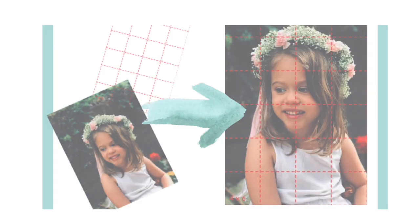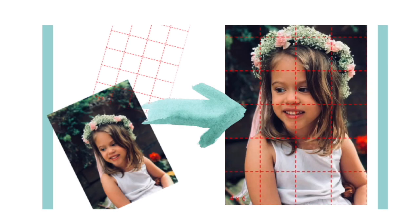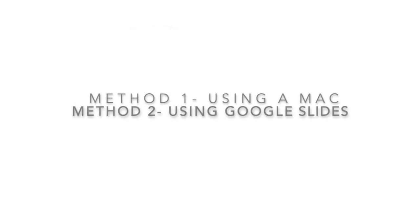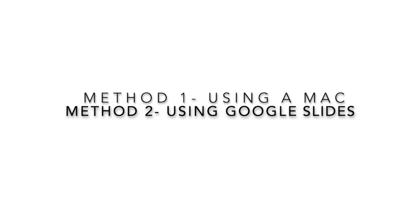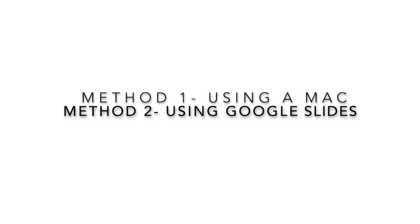Welcome back to Make Mark Studios. Today I'm going to be showing you how to create a digital grid to use for an artwork. This is awesome because it saves you a lot of printer ink and paper. We're going to show two methods: one is using a Mac, and method two is using Google Slides.